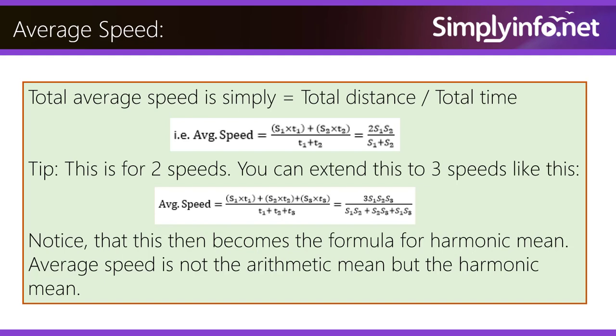Average speed equals s1 into t1 plus s2 into t2 plus s3 into t3 divided by t1 plus t2 plus t3, which equals 3s1s2s3 divided by s1s2 plus s2s3 plus s1s3. Notice that this then becomes the formula for harmonic mean.